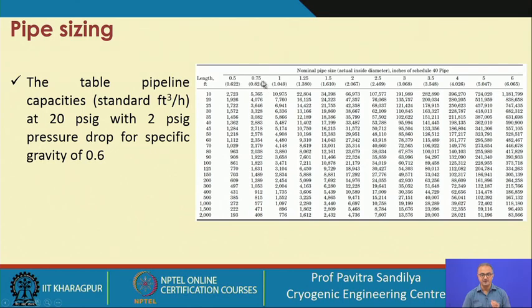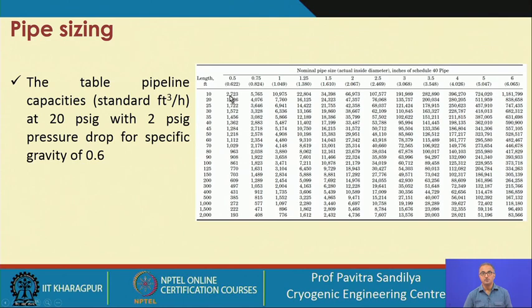The nominal pipe sizes of 0.5, 0.75, etc. are given, and with the calculated inside diameter from schedule 40, the capacities can be read. For example, a pipeline of 0.5-inch nominal diameter, schedule 40, has a capacity given in standard cubic feet per hour. This is how we find the allowable capacity for various pipe sizes.